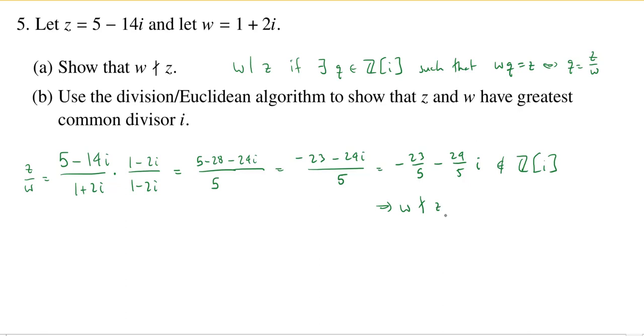Okay, so part b says, fine, it doesn't divide it. You can use the division algorithm, or the Euclidean algorithm, when you do the division algorithm multiple times, to find the greatest common divisor of z and w. In fact, we want to show that it's equal to i. So when you want to use the division algorithm in the Gaussian integers, we can start by doing this division, just as we've already done, and then we want to round this to the nearest Gaussian integer.